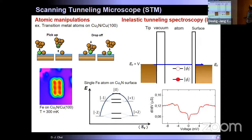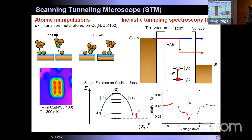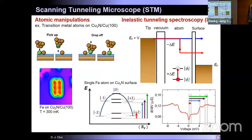Another capability is inelastic tunneling spectroscopy. We sweep the bias between the tip and the sample. At certain energies corresponding to the energy level difference between the ground state and the excited state, we can open up an additional conductance channel from inelastic tunneling. For example, when measuring on single iron atoms on copper nitride surface, you get a spectrum where the conductance increases at specific energies, mapping how energy levels are aligned in the system.